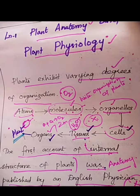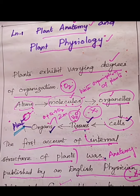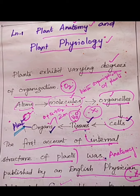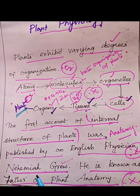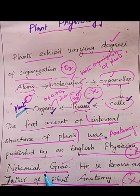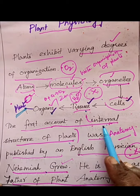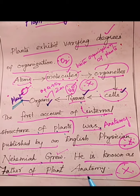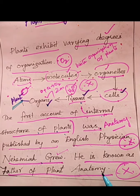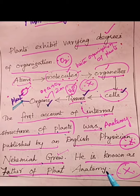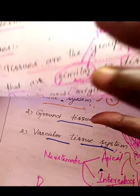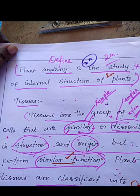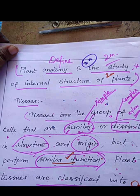The first account of the internal structure of plants — the study of internal structure, which we call anatomy — was explained by Nehemia Grew. Nehemia Grew was the scientist who first explained the internal structure of plants, so he is called the father of plant anatomy. Plant anatomy is the study of the internal structure of plants.